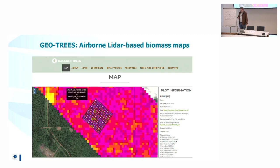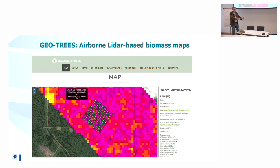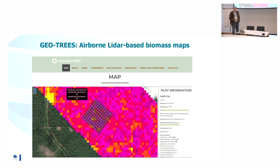Here is an example you can already see in our DataGeoTrees web portal: a big plot of 500×500 meters, divided into 50×50 meter subplots. Each subplot has biomass and canopy height values. Even in homogeneous forest, the difference in biomass can be four times — you might have one subplot with 100 tons of biomass and the next with 400 tons. It is very important to capture this structure and variability of natural forest. You can also see an airborne laser scanning-based biomass map at 50-meter resolution.